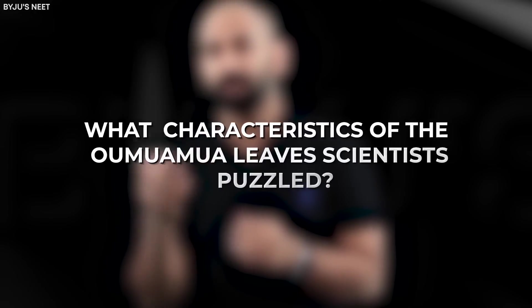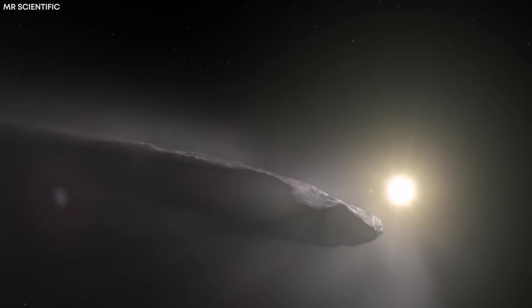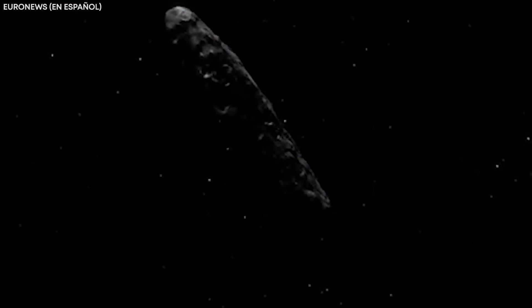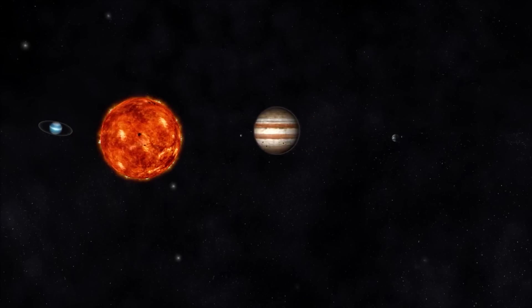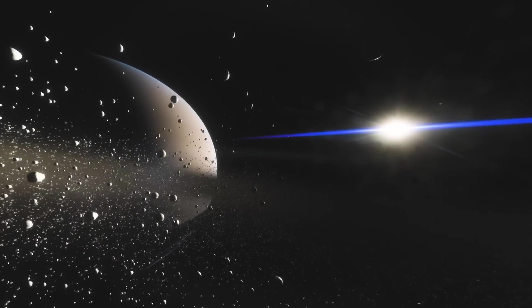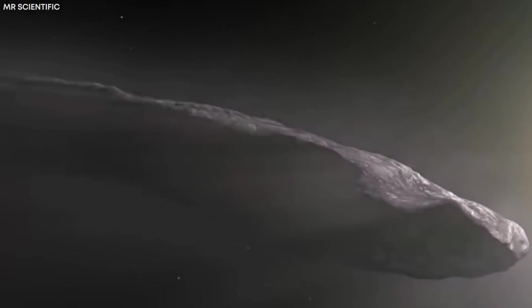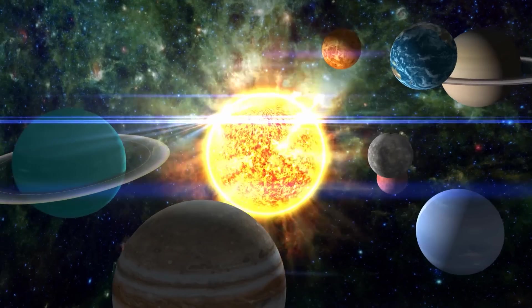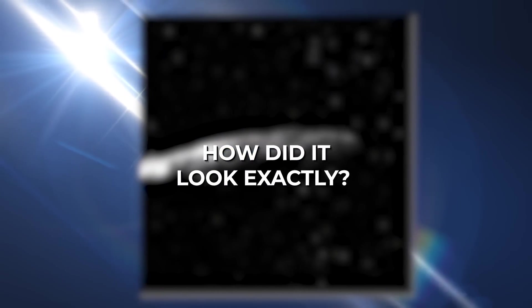But what characteristics of the Oumuamua leave scientists puzzled? When encountering Oumuamua, the first noteworthy thing is its strange and abnormal look and shape, different from anything known in our spherical solar system. For the citizens of the Milky Way solar system, it is usual to encounter space objects that are spherical in shape. This is a result of gravity pulling in from various planets within. But the Oumuamua shape is nothing like that of objects born within this solar system. But how did it look exactly?